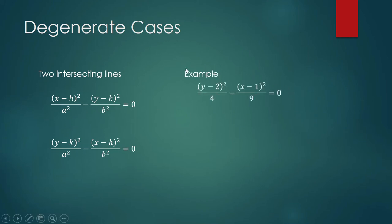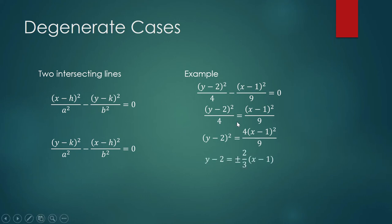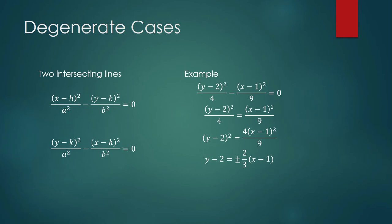Let's say this is our degenerate hyperbola, given in standard form. In order to get the equations of the lines, we separate the terms and solve for y minus 2 by isolating it — using transposition and taking the square root. The square root of (y minus 2) squared and the square root of the other term give plus or minus: the square root of 4 is 2, the square root of 9 is 3, and the square root cancels the power of (x minus 1). So the two line equations are: y minus 2 equals positive two-thirds times (x minus 1), and y minus 2 equals negative two-thirds times (x minus 1).